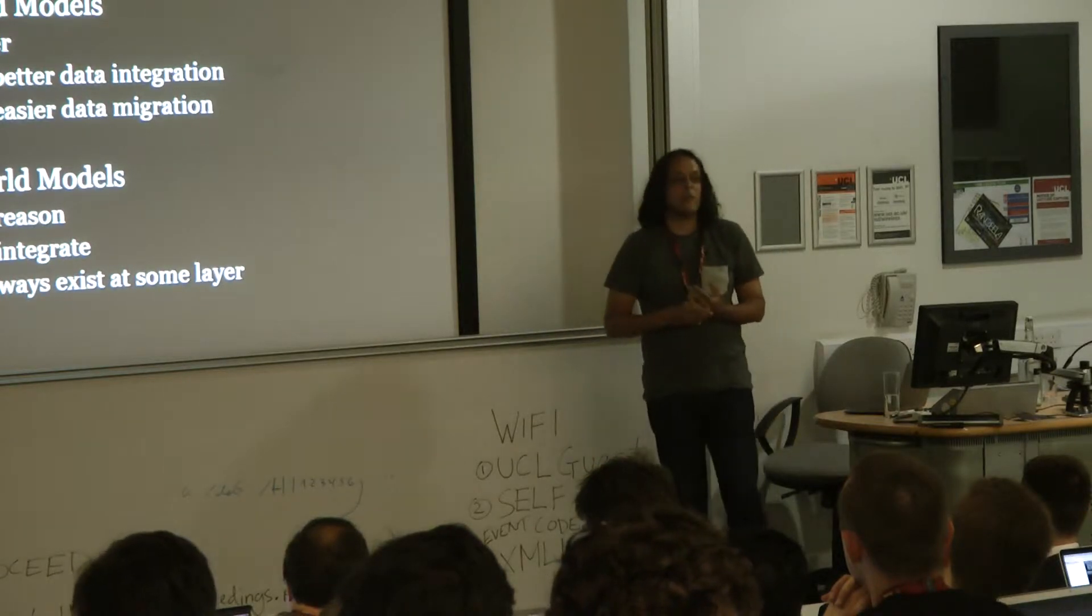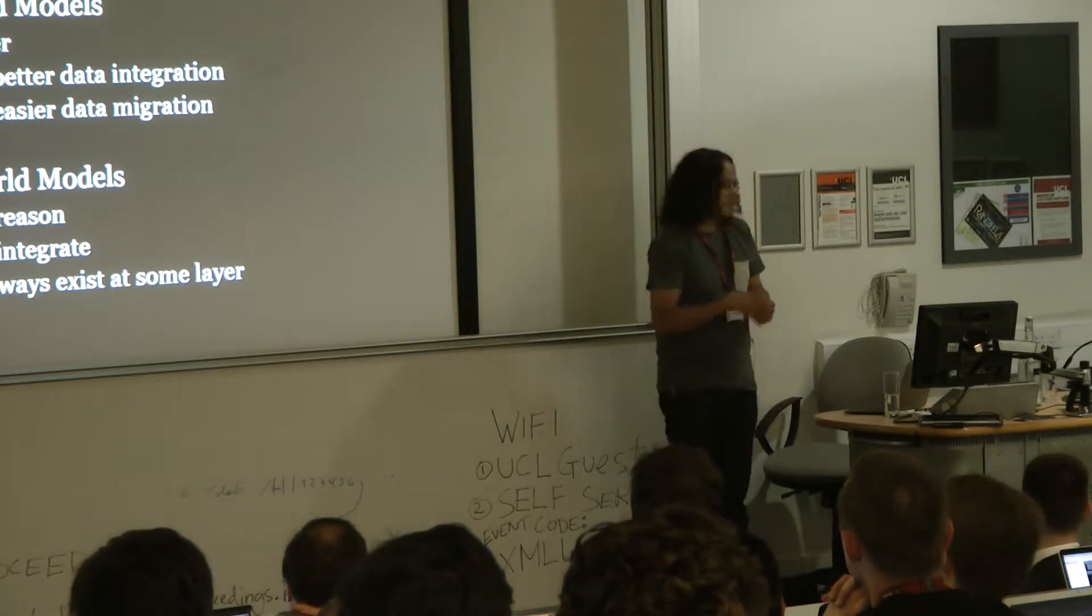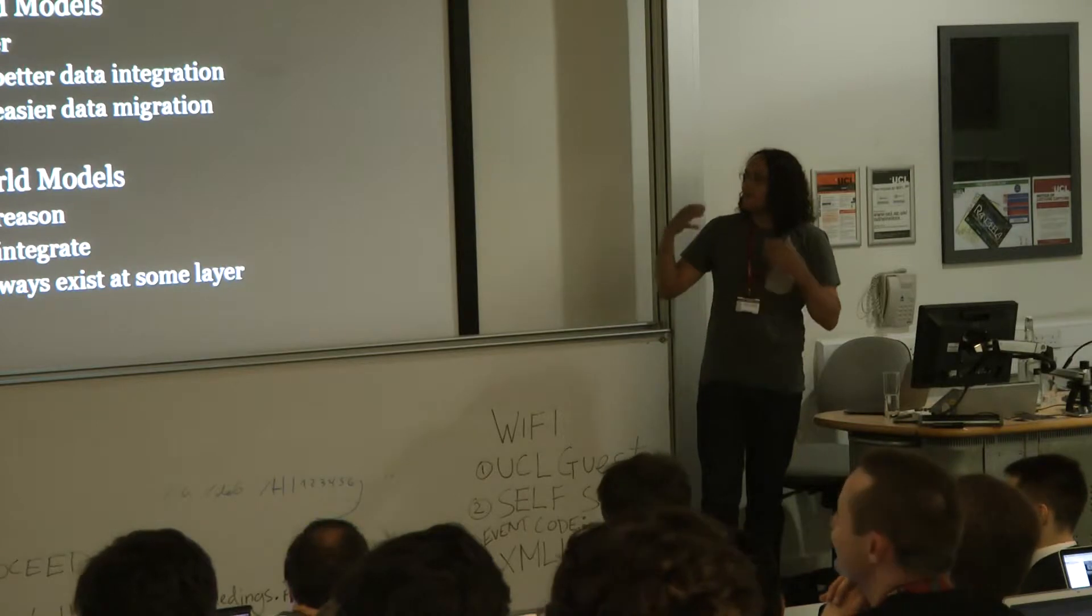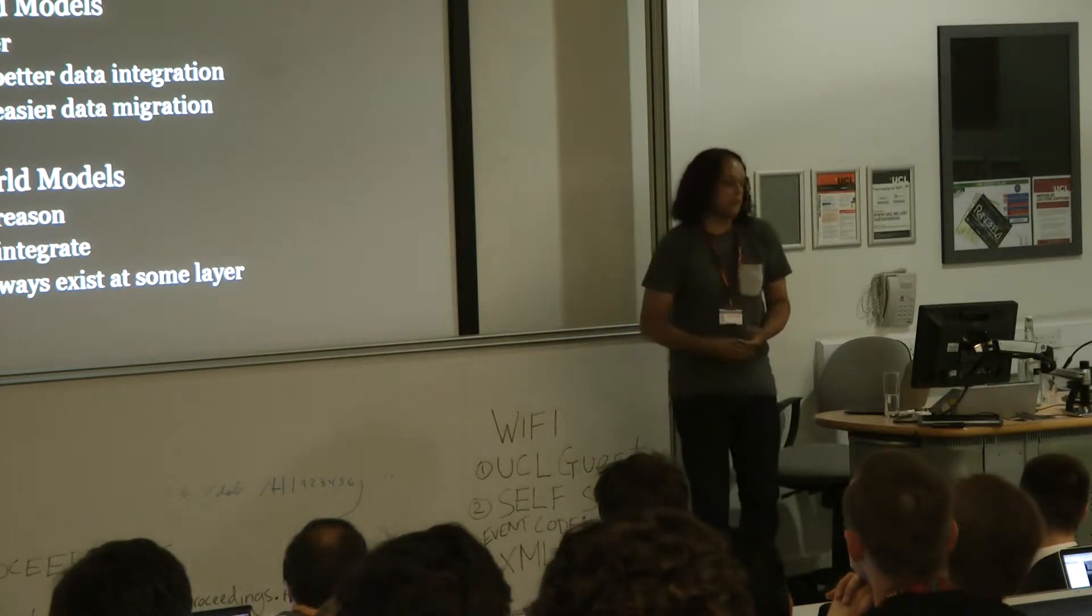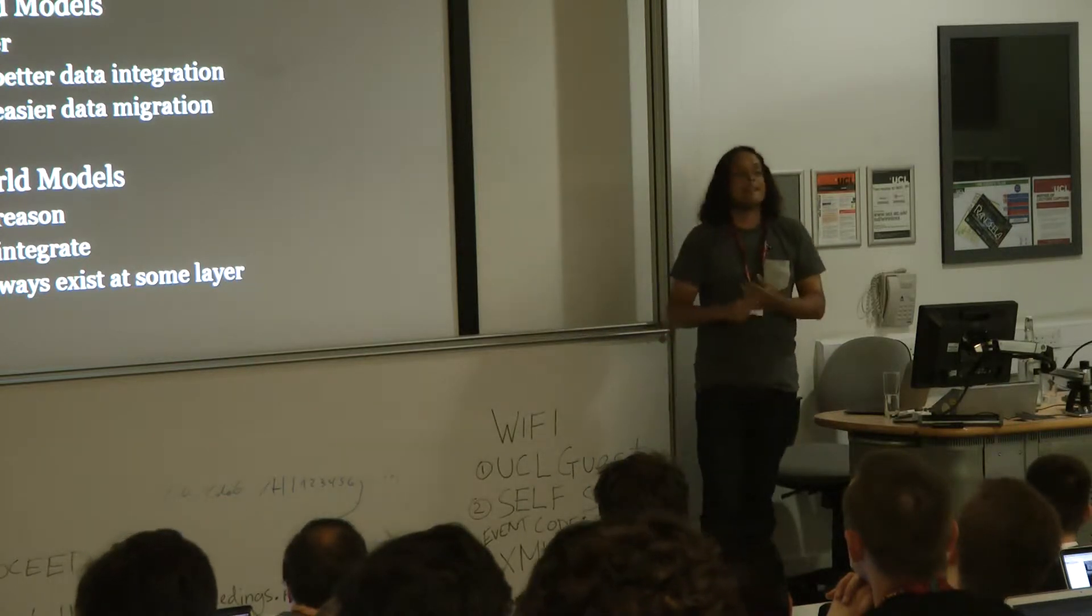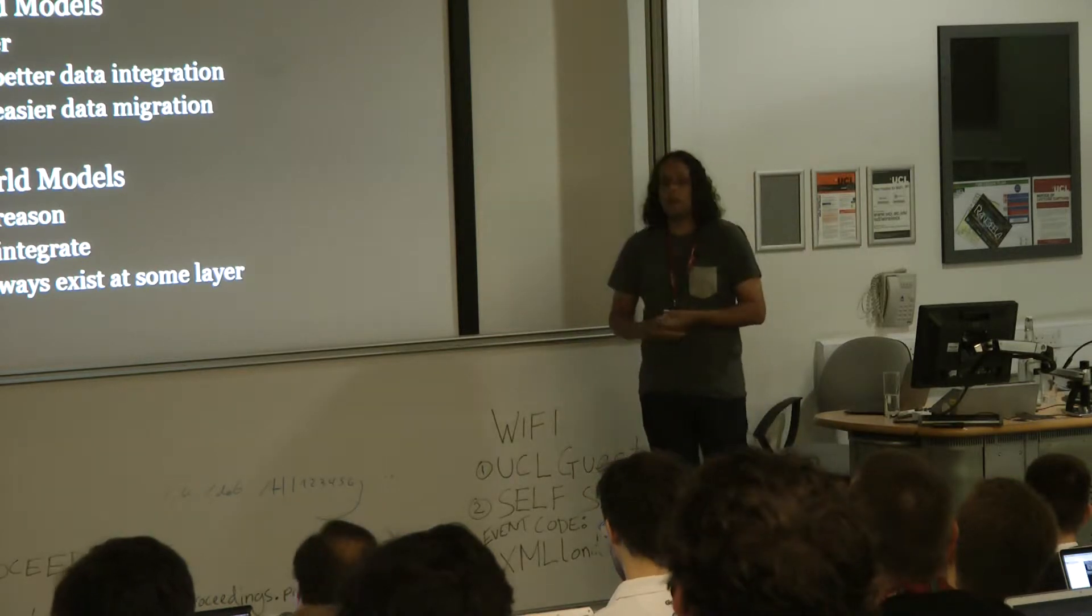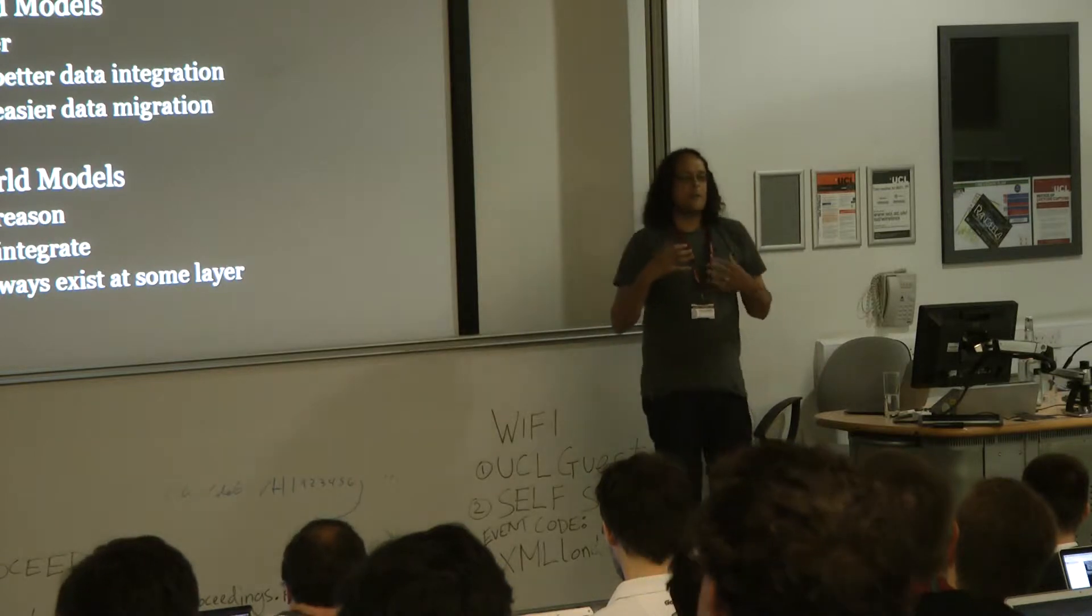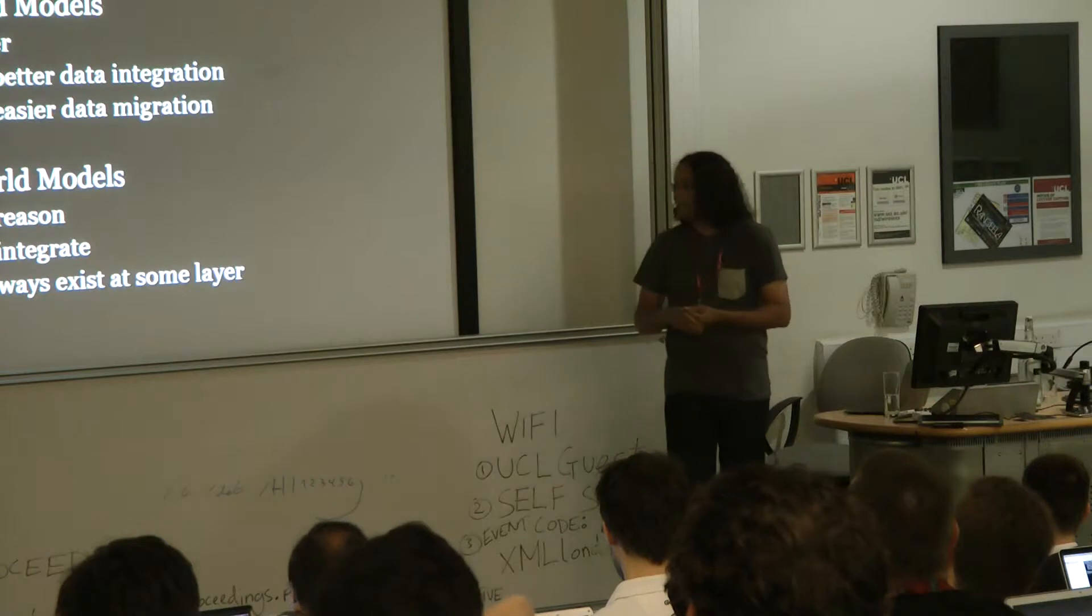However, closed-world models are basically what we use in programming, right? Whenever we write a set of classes or interfaces, in any of your programming languages. Most programming languages, you end up with a closed-world model defined by some classes and interfaces. And we do that for a lot of reasons. Basically, because it makes our job easier as programmers. It makes it much easier to reason about a closed-world model. It's much easier for us to think about how we relate to the outside world because we've got a simplified model of it.